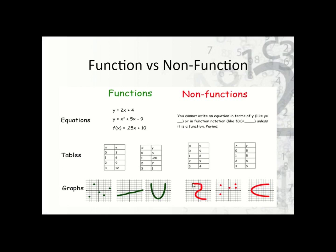Non-functions look something like this. Notice if I pick an x value like x equals 0 — when x is 0, there are three different y values that match up. That doesn't work. Same thing here: if we look at this x value, there are two y values that make it true. And here, if I pick x equals 0, there are two points. So again, not a function.